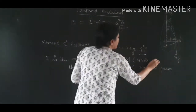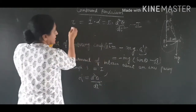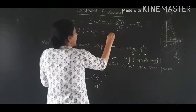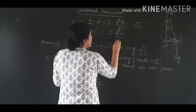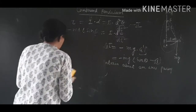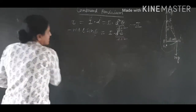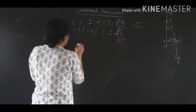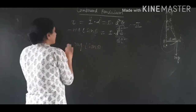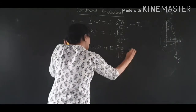This gives us equation 1 (restoring couple = −mgl·sinθ) and equation 2 (τ = I·d²θ/dt²). Equating the two: −mgl·sinθ = I·d²θ/dt². Taking both terms to one side: I·d²θ/dt² + mgl·sinθ = 0.